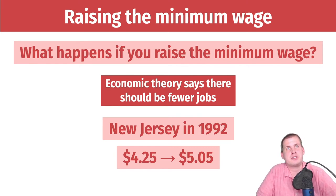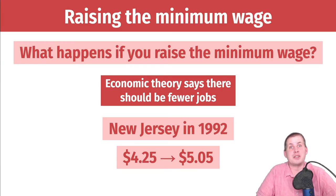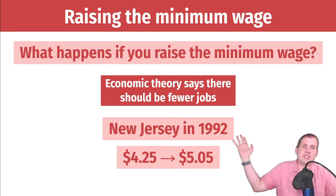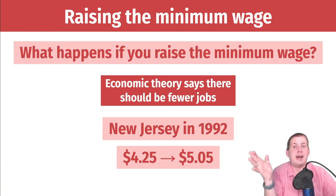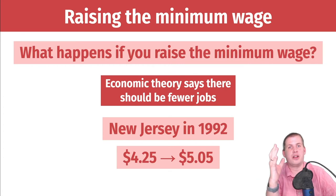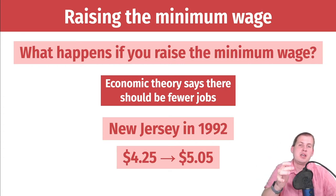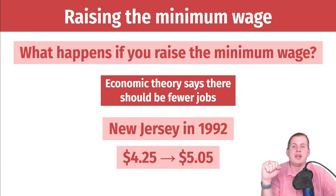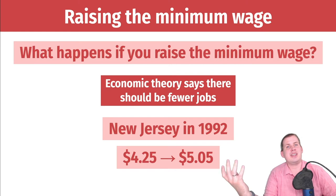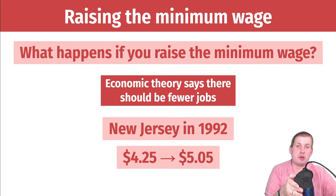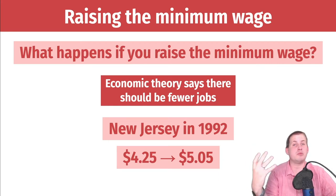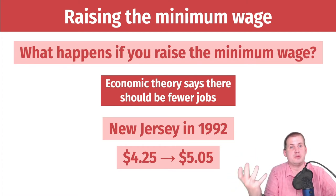Economists in the 1990s saw this as a potential quasi-experiment, because New Jersey raised its minimum wage but neighboring Pennsylvania did not. Pennsylvania is a big state — western Pennsylvania is very different from eastern Pennsylvania, which is right on the border with New Jersey. The researchers looked specifically at restaurants and businesses close to New Jersey, so eastern Pennsylvania, which is more comparable to New Jersey. They essentially said: this is like a treatment and control group — let's see if there's a change in employment. Are restaurants hiring fewer people because minimum wage went up?